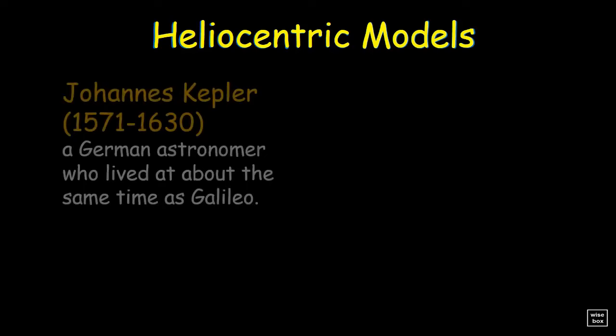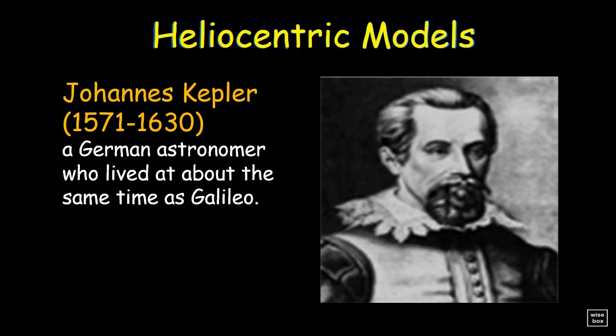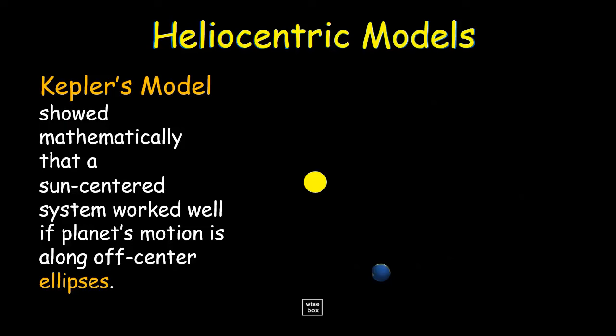Johannes Kepler, a German astronomer who lived at about the same time as Galileo. He also believed in the heliocentric model of the universe. In Kepler's model, he showed mathematically that Copernicus' idea of a Sun-centered system worked well if the uniform circular motion was replaced with uneven but predictable motion along off-center ellipses.